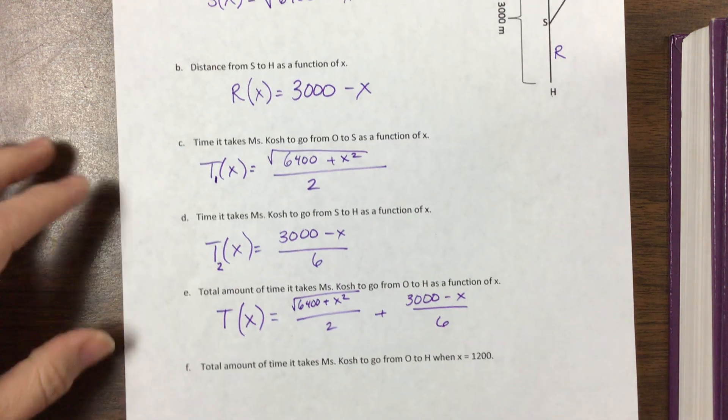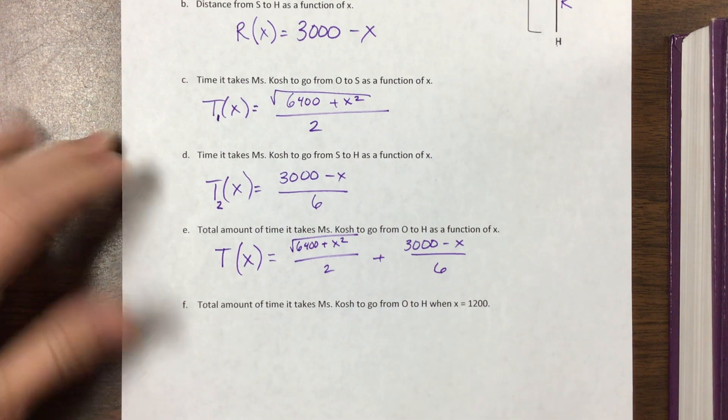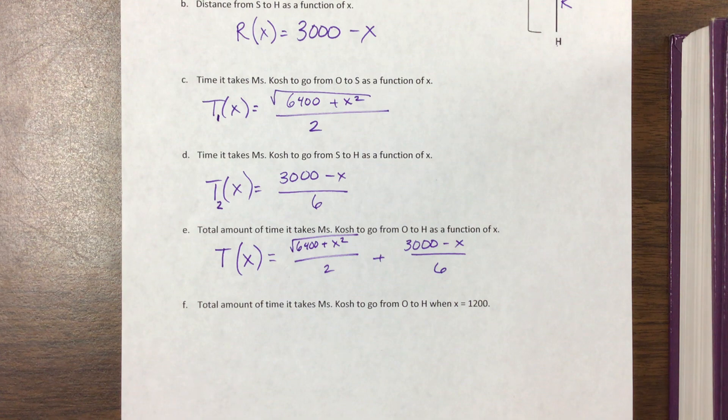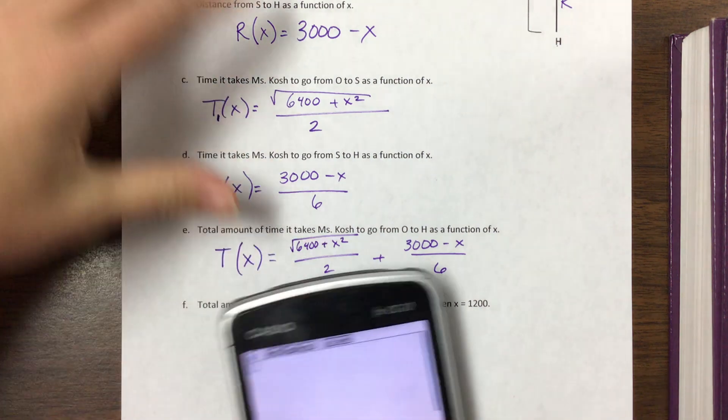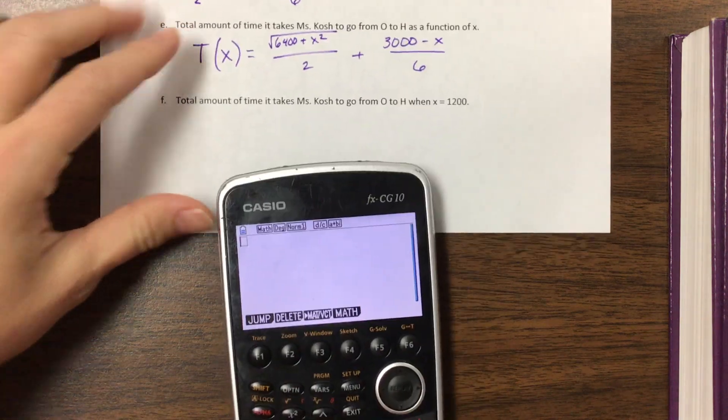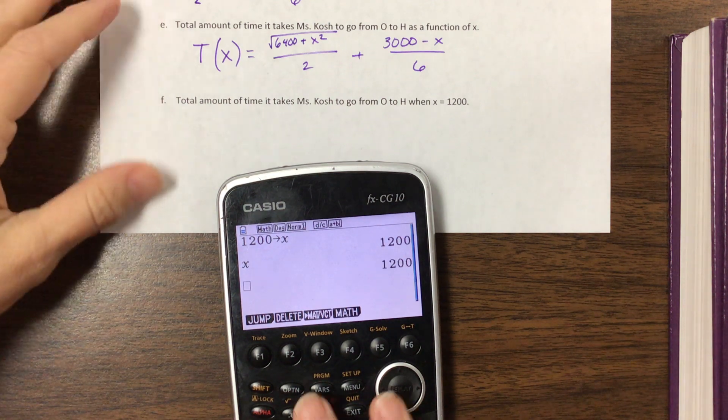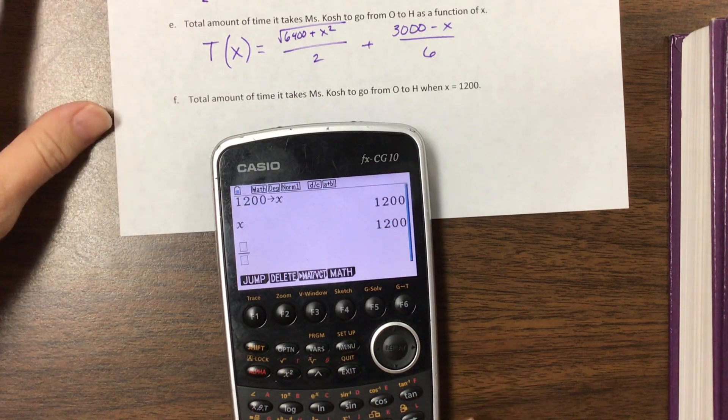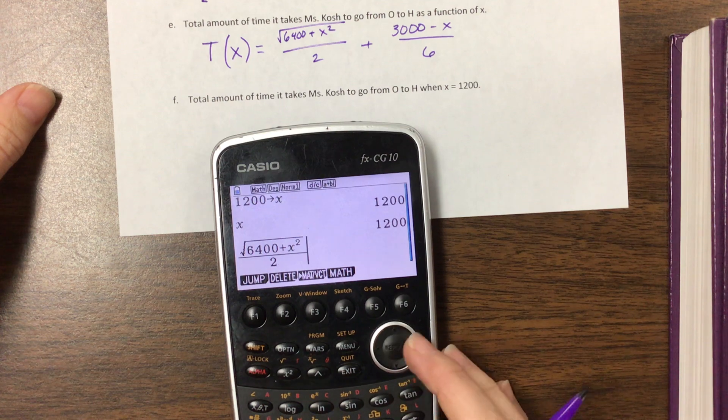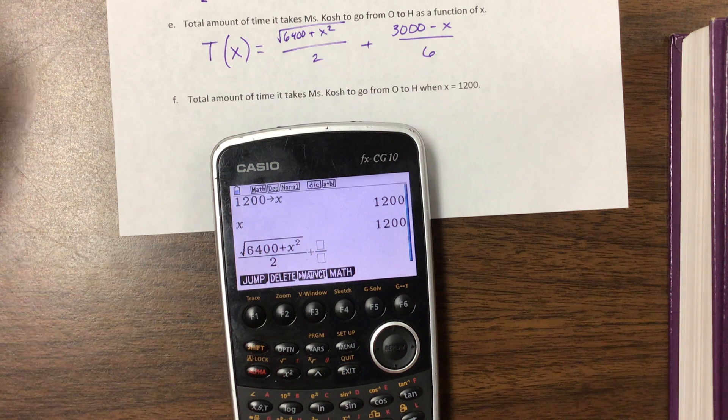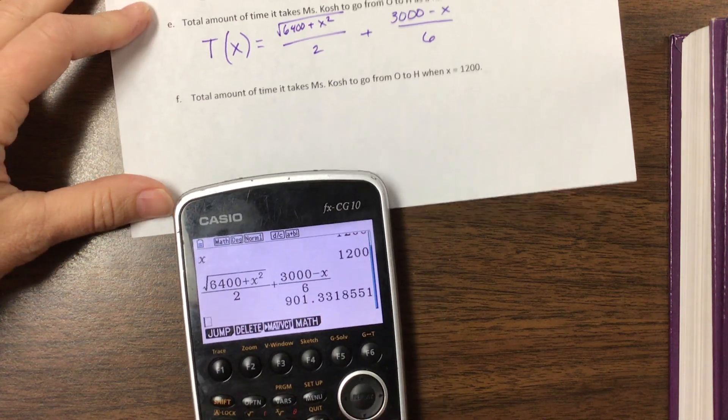And this one, the total amount of time when X equals 1200. So they've given us a value here. On something like this I'm not gonna expect to be able to do this without a calculator, so since your quiz or test will be no calculator I'm gonna change it up a bit. So at this point I can take this 1200 and store it as X so now anytime I type in X my calculator knows that I want it to be 1200. So I'm just gonna type it in as I see it. So it's the square root of 6400 plus X squared, divided by 2 plus... I was just too lazy to type 1200 twice, that's really the truth of it.